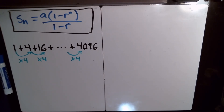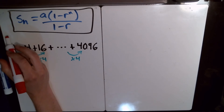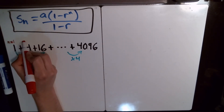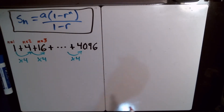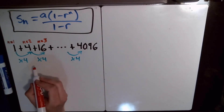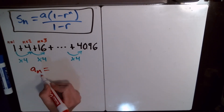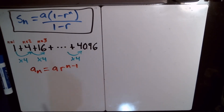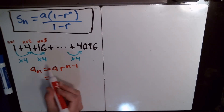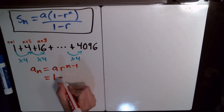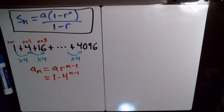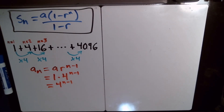So what is the formula for our geometric sequence? It should be 1 when n equals 1, four when n equals 2, 16 at n equals 3, and so on. The formula for geometric sequences is a sub n equals a times r to the n minus 1. The first term a is 1, and the common ratio r is 4, so the equation for our sequence is 4 raised to the n minus 1 power.